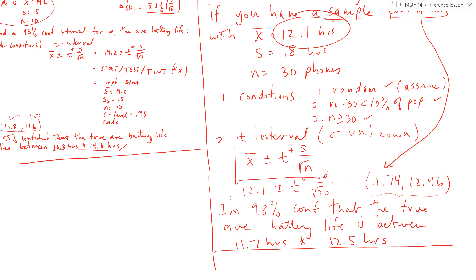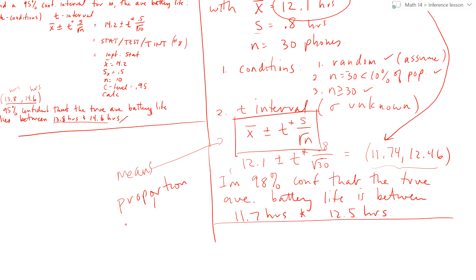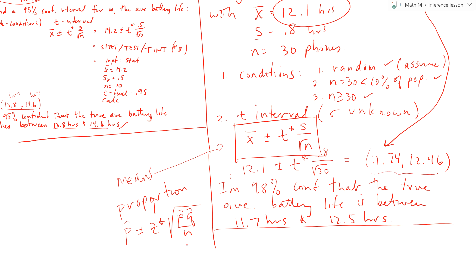So you just have to be able to identify: is this a means problem? The formula is X̄ ± T* × S/√N. Or if it's a proportion, the formula is P̂ ± Z* × √(P̂Q̂/N) — that's what we did the other day. This is enough information for you to do sections 9.1 and 9.2. I'm going to come back on the next video and do hypothesis testing.